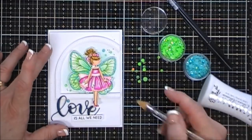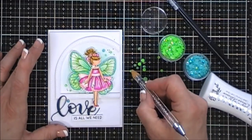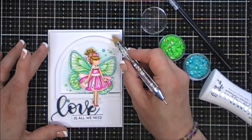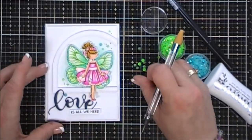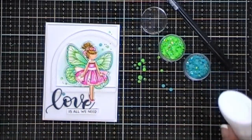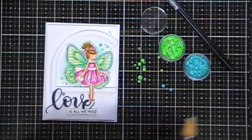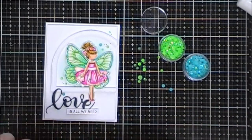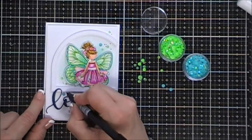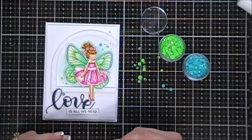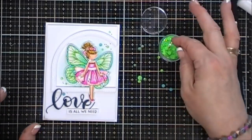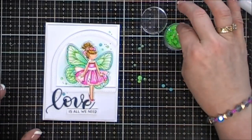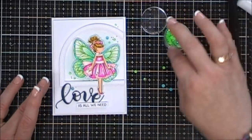For some bells and whistles, I went in with some of my green and blue little gems. I'm just placing them around my little image. To bring the black from the sentiment all the way up, I added a few extra little dots—controlled splatter, I call it—with my black marker there. I think she turned out really fun.